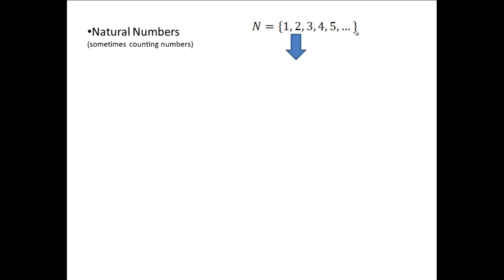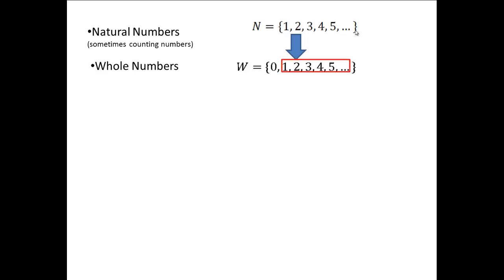The next set of numbers was needed because we wanted to represent the concept of nothingness, which is 0 or Shunya. That concept of nothingness along with natural numbers represented whole numbers. We use the letter W to represent whole numbers. Notice the set of natural numbers is a subset of whole numbers — subset just means that all of the natural numbers are also whole numbers.